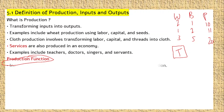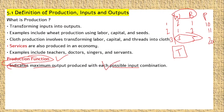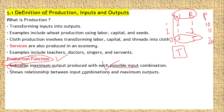You can also indicate the maximum output — the maximum output produced using each possible input combination. This is the combination of the output. The input combination is the same. The maximum output is the level of the production function. The maximum output produced using all possible outcomes. This shows the relationship between input combination and maximum output.